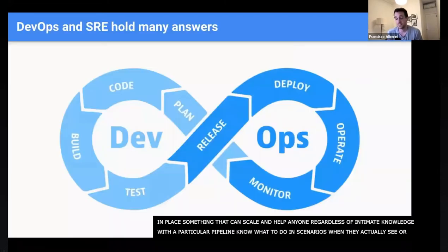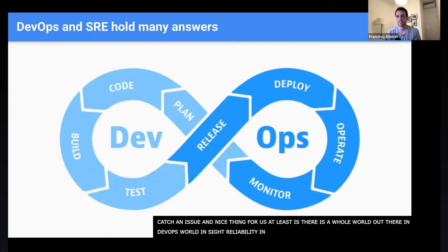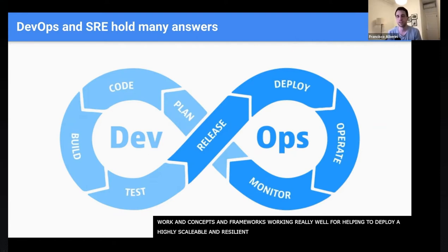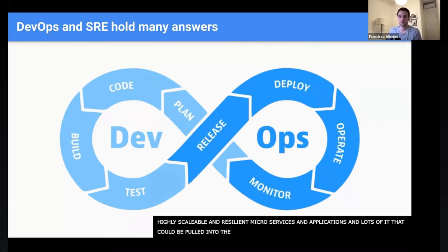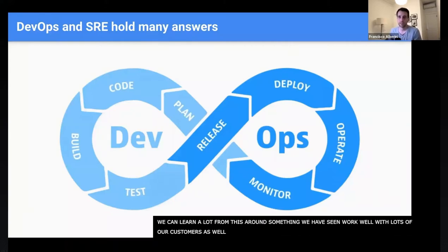The nice thing is that there's a whole world out there in DevOps and site reliability engineering of processes, concepts, and frameworks that work really well for helping deploy highly scalable, highly resilient microservices and applications. A lot of that can be pulled into the data world, and we've seen a lot of uptake in these concepts and frameworks with our customers.